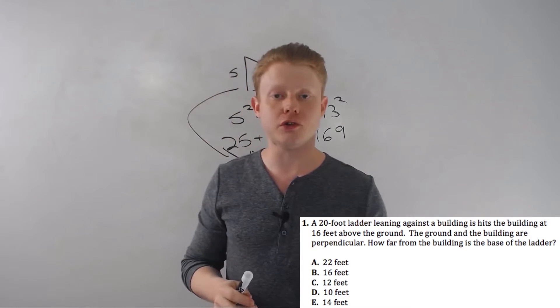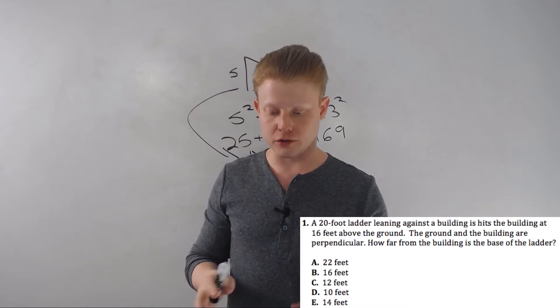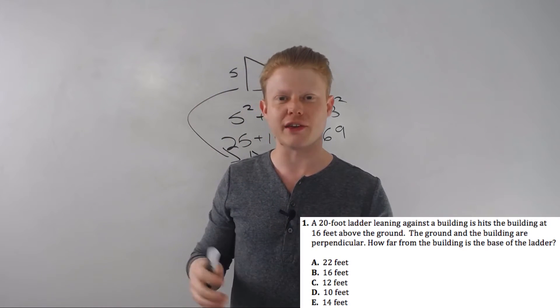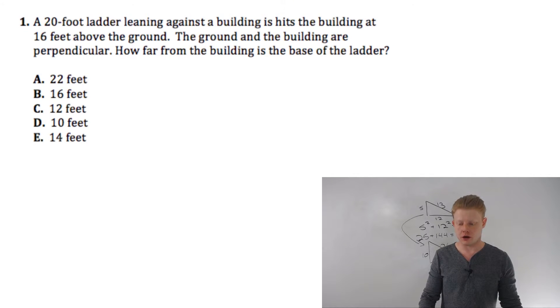I'm going to flip into full screen mode to do this problem at the bottom of the screen. This is a good example of a question you could save a lot of time on if you knew your special rights. We've got a word question here. They describe a diagram, we're going to draw it. We've got a ladder leaning against the building, and that ladder is 20 feet long. The ladder is leaning, so that's going to be our hypotenuse.